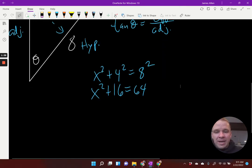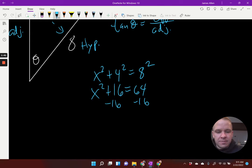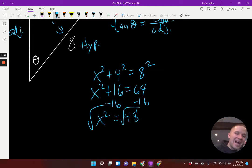And now I need to get that X squared by itself by subtracting 16 on both sides, which leaves me with X squared equals 48. All right. So now I got to square root on both sides and it's not a perfect square. I got to factor treat this thing.